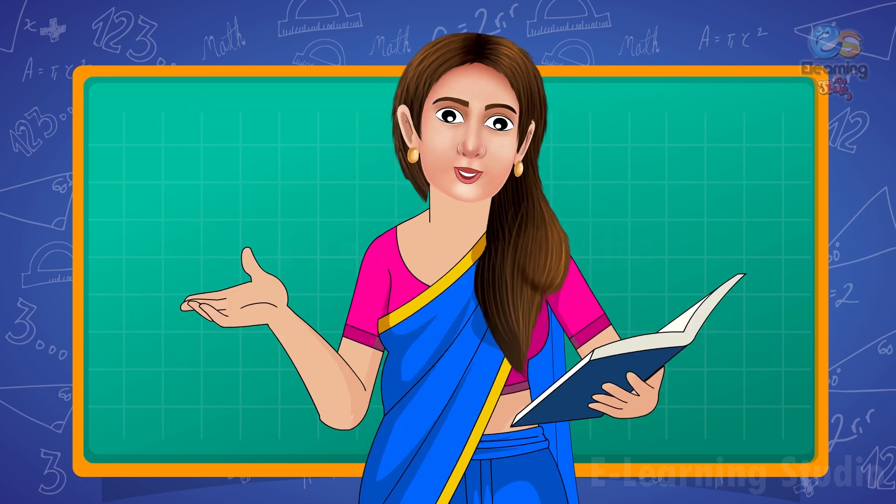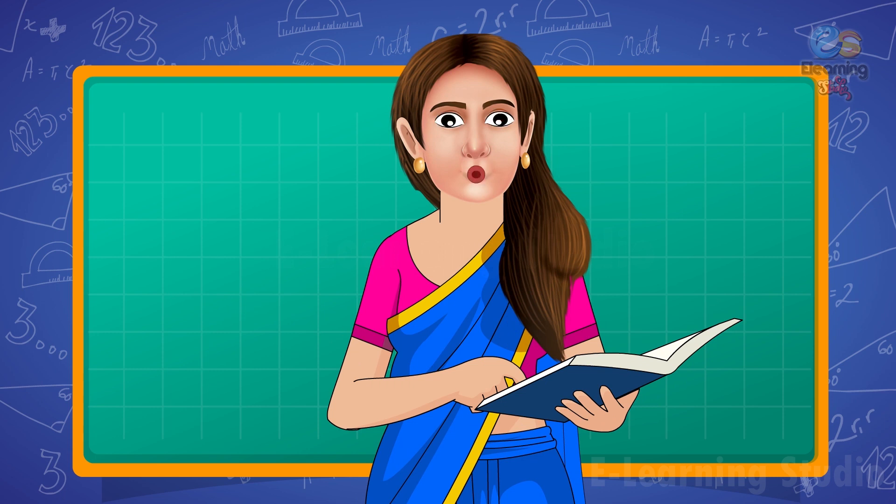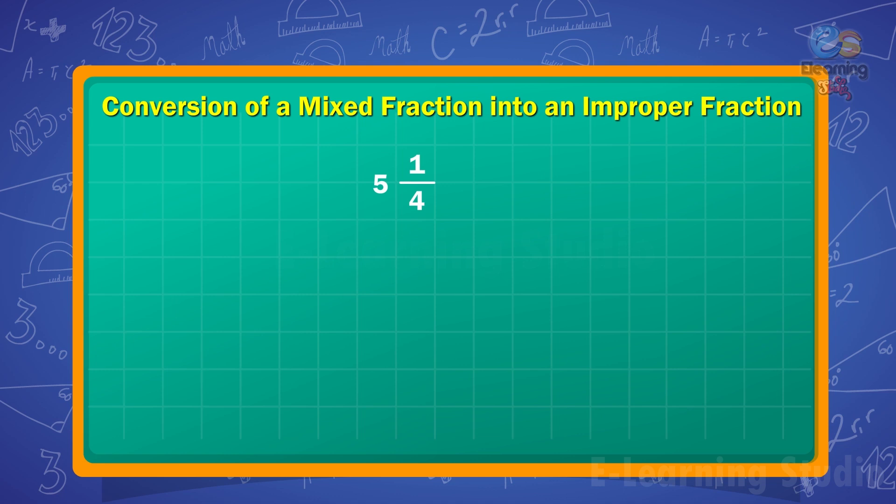Children, let's understand this with the help of some examples. For example, 5 and 1 upon 4 is a mixed fraction. To convert a mixed fraction into an improper fraction,